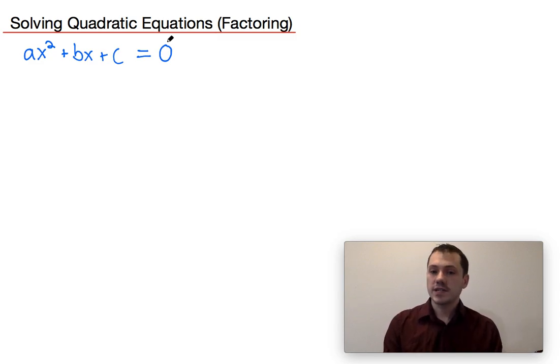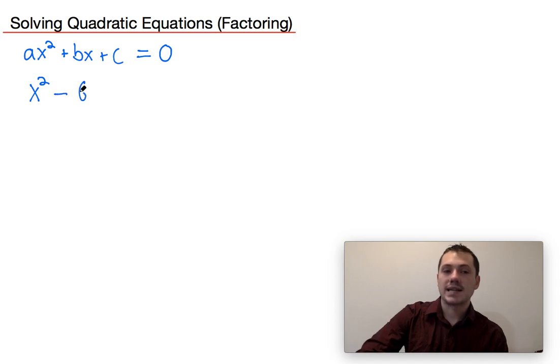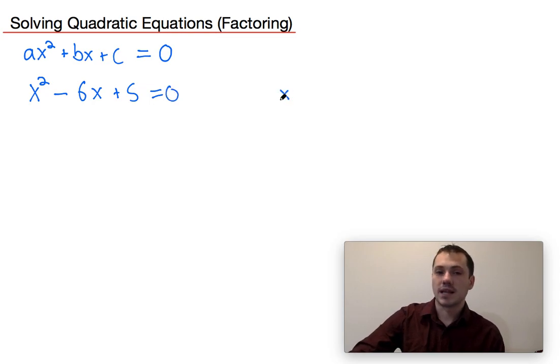Now there's two different types of problems that you want to focus on. One is the case where a is not equal to zero, so this might just be something like x squared minus 6x plus 5 equals zero, or maybe something like x squared plus 7x plus 12 is equal to zero.